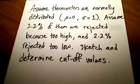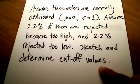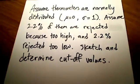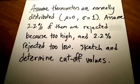This problem asks us to sketch and find the cutoff values for this given problem. It says that we have thermometers that are normally distributed with a mean of 0 and a standard deviation of 1.